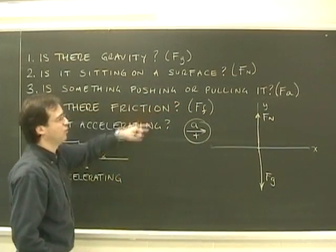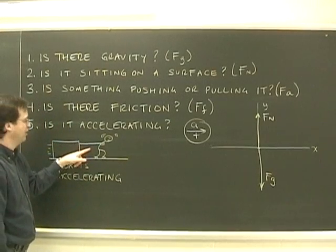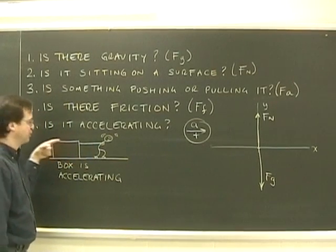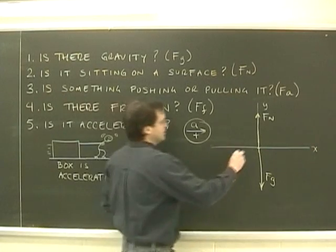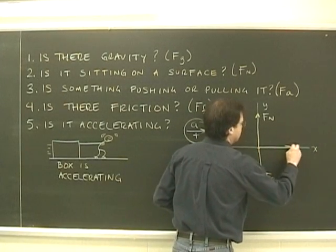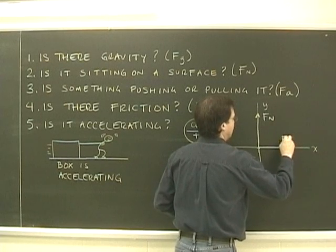Is something pushing or pulling on it? Yes, there's definitely someone pulling on it. They're pulling with a rope, so the force must be in the direction of the rope, because we're interested in the object. So I'm going to draw that here. That would be Fa.